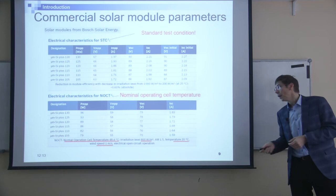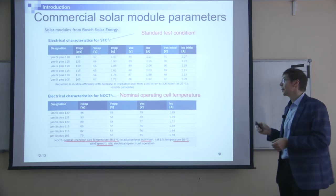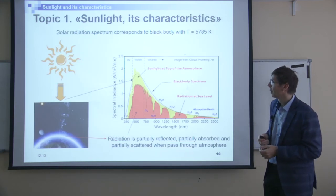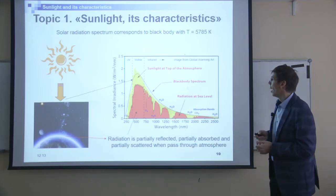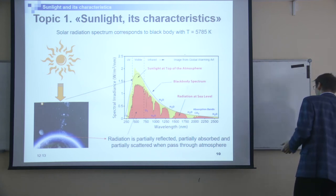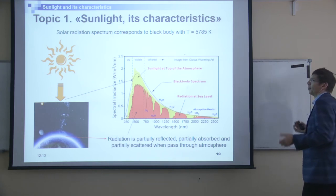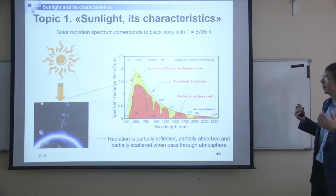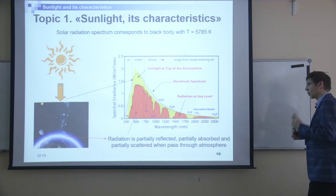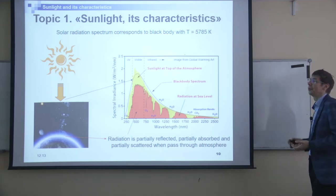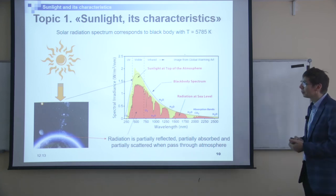What does this standard test condition mean? To describe it, first I have to describe what the solar radiation spectrum is. If you open any book, you will find that the solar radiation spectrum corresponds to the radiation of a black body with a temperature of about 6000 Kelvin degrees.